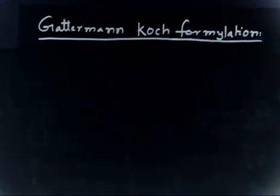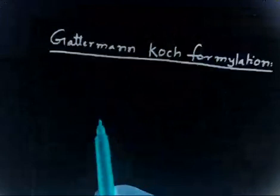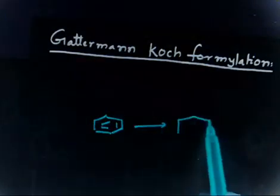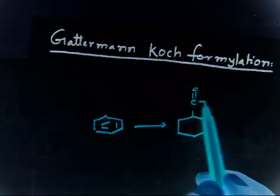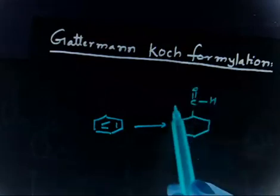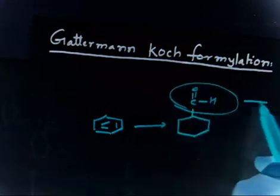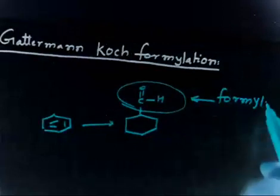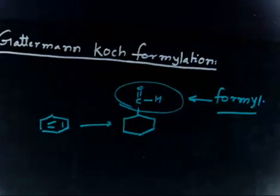Let us discuss Gattermann-Koch Formylation. If I have benzene and I want to convert this to add a CHO group, this group is called the formyl group. Now I am asking a question: How will you do that?